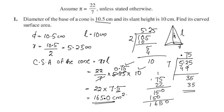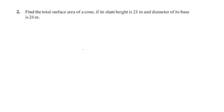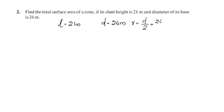The curved surface area is 165 cm². Next, find the total surface area of a cone if its slant height is 21 metres and the diameter of its base is 24 metres. So L is 21 m. The radius is 24 divided by 2 equals 12 metres.